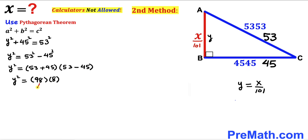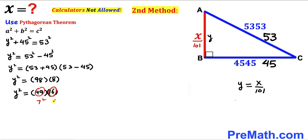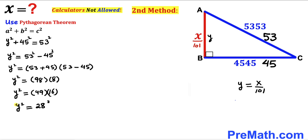We compute: 53 + 45 = 98 and 53 − 45 = 8, so y² = 98 × 8. Writing 98 = 49 × 2, we get 2 × 8 = 16, so y² = 49 × 16. Since 49 = 7² and 16 = 4², we have y² = (7 × 4)² = 28². Taking the square root, y = 28.